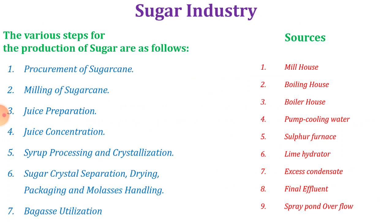There are different steps involved in sugar production: procurement of sugarcane, milling of sugarcane, juice preparation, juice concentration, syrup processing and crystallization, sugar crystal separation, drying, packaging and molasses handling, and the last one is bagasse utilization.